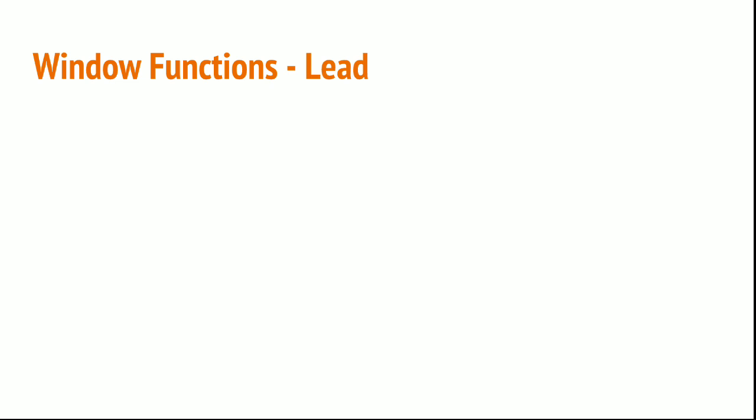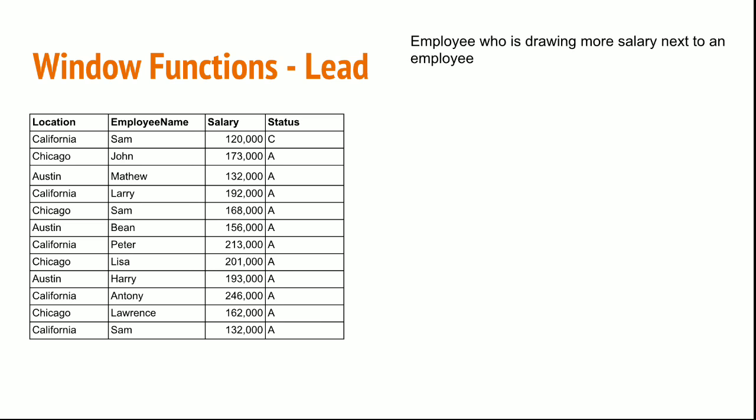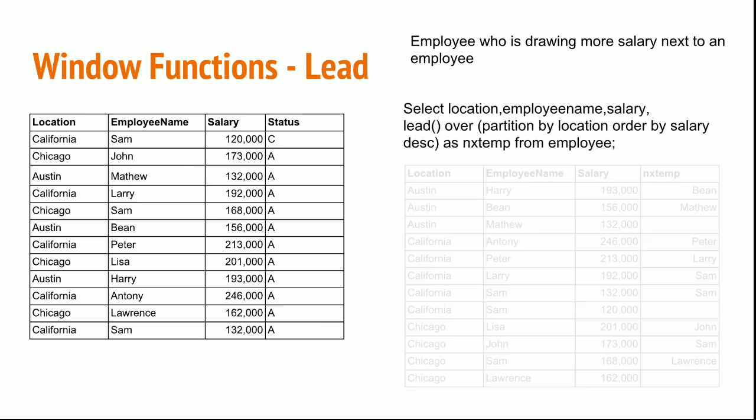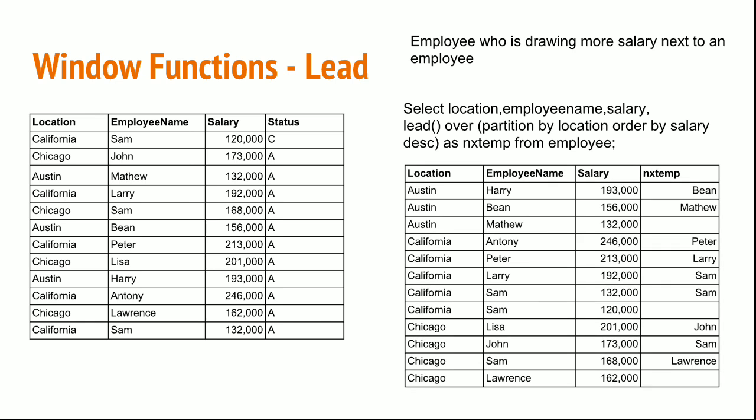There is a lead function. If I want to see the immediate next employee who is drawing a salary just after the first employee, I can use the lead function. The syntax is: SELECT location, employee_name, salary, LEAD(employee_name) OVER (PARTITION BY location ORDER BY salary). So the next employee name — for example, Bean — will be returned using LEAD(employee_name) OVER (PARTITION BY location ORDER BY salary).